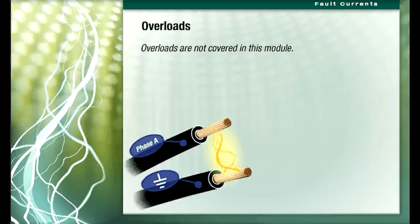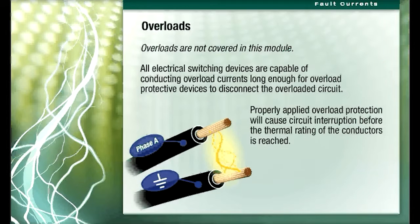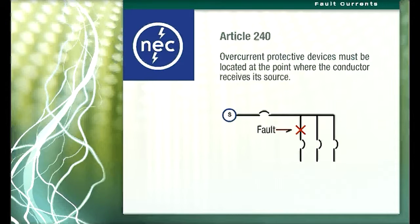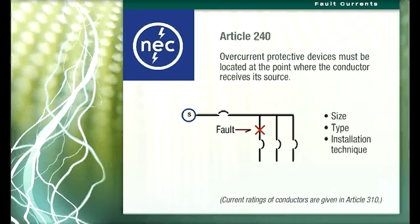Overloads will be ignored in this discussion because all electrical switching devices are capable of conducting overload currents long enough for overload protective devices to disconnect the overloaded circuit. Properly applied overload protection will cause circuit interruption before the thermal rating of the conductors is reached. NEC Article 240 establishes the criteria for the selection and location of overcurrent protective devices. In essence, the code requires that the overcurrent protection be located at the point where the conductor receives its source.